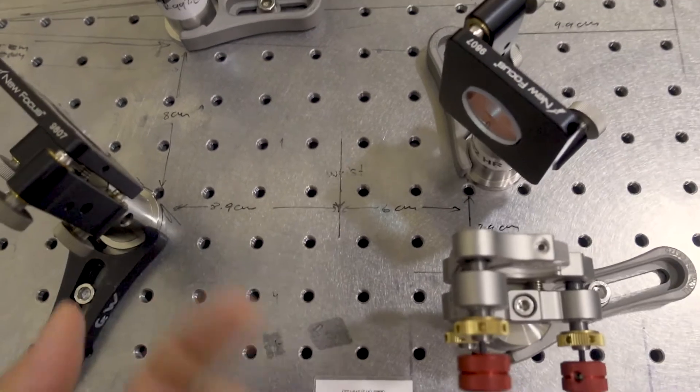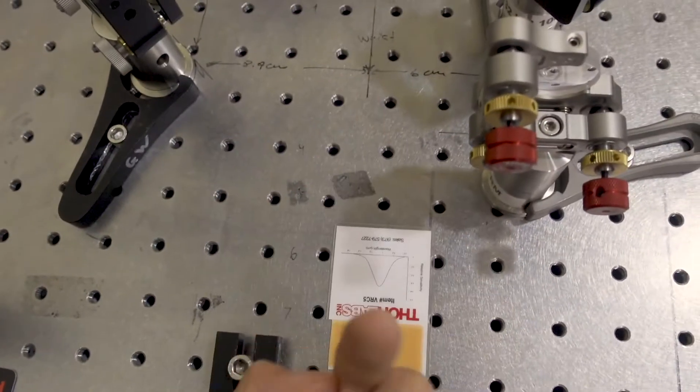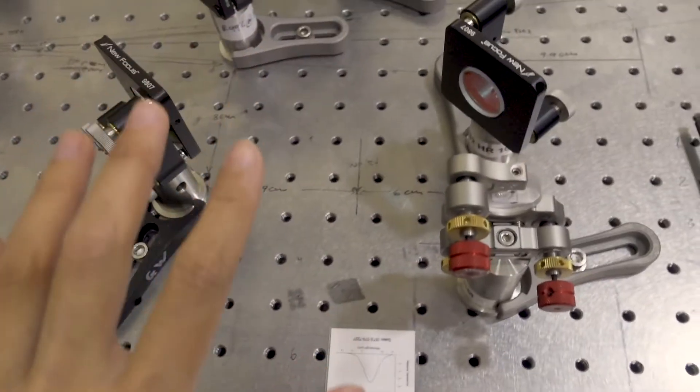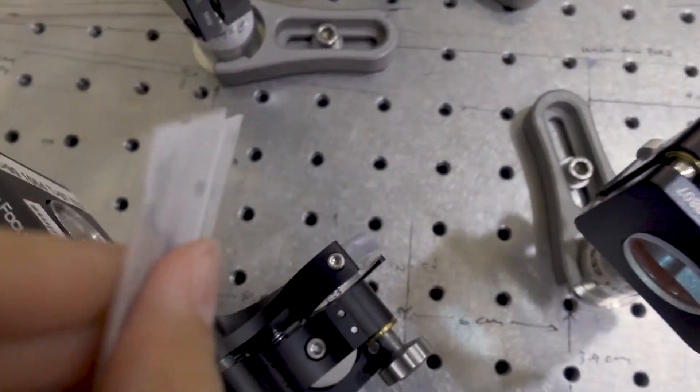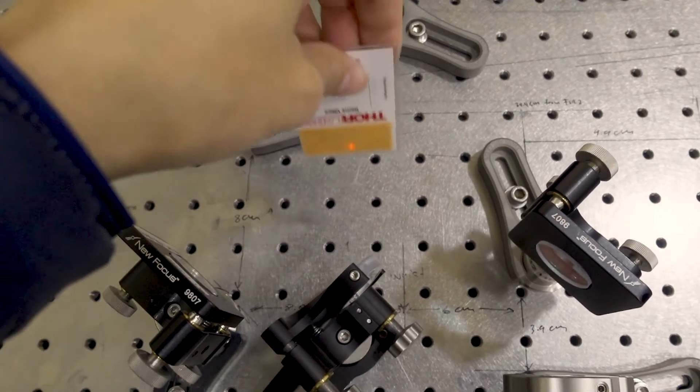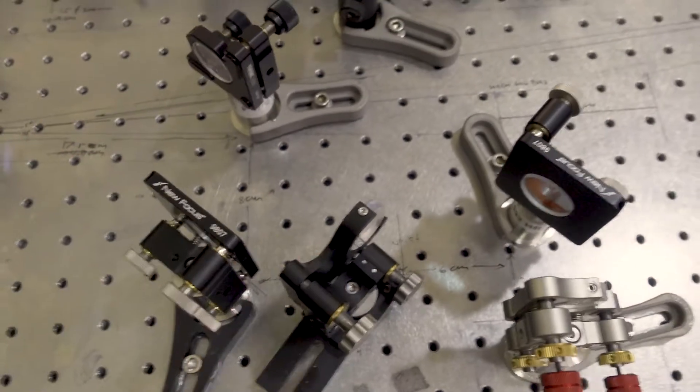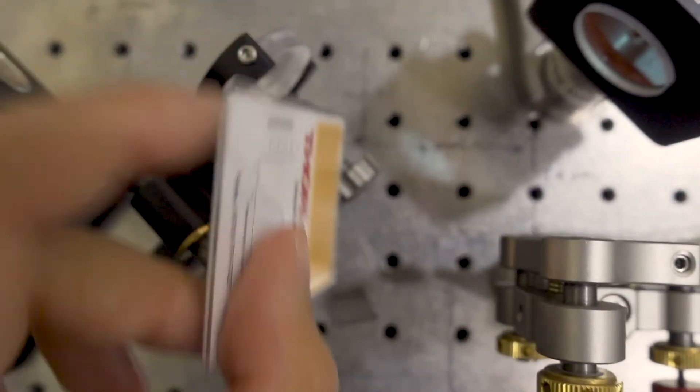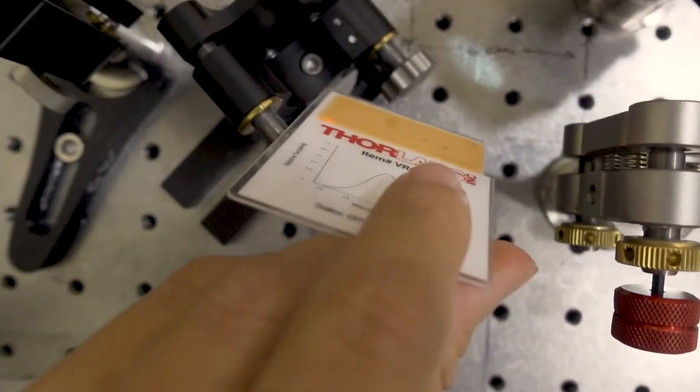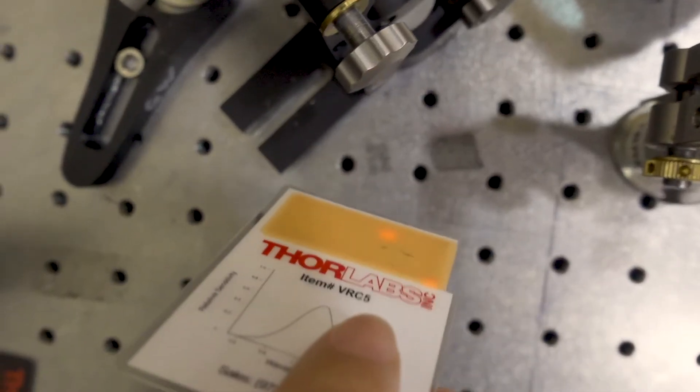Here I just installed a beam splitter. This is a wedged uncoated beam splitter; that's why there's two beams coming out. But if you can find a better one, that would be nice—unwedged maybe. And you can see that for the return beam we have something coming out here which we can measure a beam profile of.